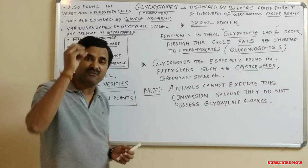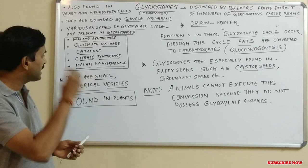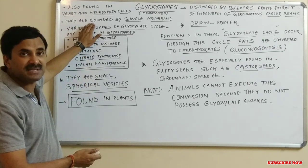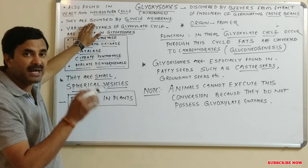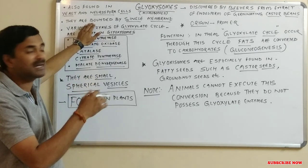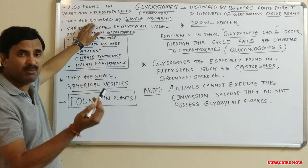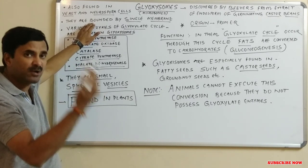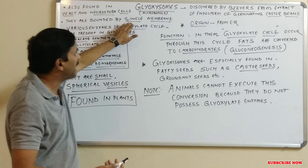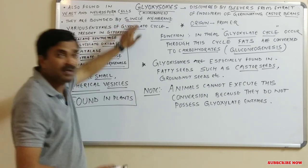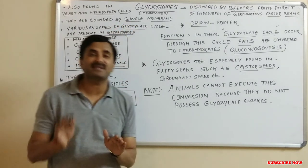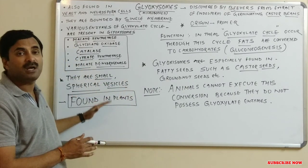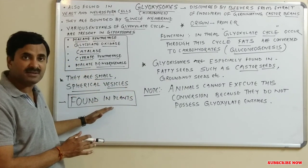Glyoxysomes are small spherical vesicles — small structures that are spherical in structure and bounded by a single membrane. Notably, all microbodies — peroxisomes, spherosomes, and glyoxysomes — are bounded by a single membrane. Glyoxysomes are found particularly in plants; they are not found in animals.